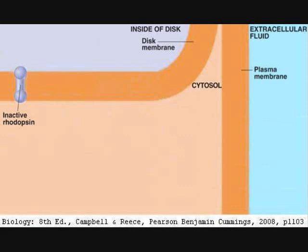The diagram shows an inactive rhodopsin molecule, which is capable of absorbing a photon of light. In the inactive state, retinal exists in its 11-cis-retinal configuration.